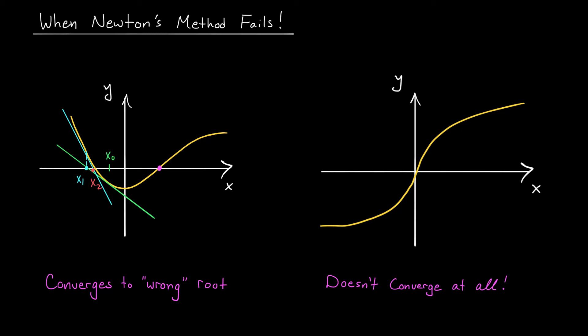Notice anything interesting here? It looks like my points are getting closer and closer to this root over here, not the root I actually wanted to approximate. The problem here is in our initial guess, x0. The issue is not that it's too far away from the desired root, but that it's on the wrong side of this critical point. Because we're on this downward sloping side, my tangent lines are going to carry me over to the root on the left. If instead I had picked an x0 on the right side of this critical point, Newton's method would carry me to the desired root.